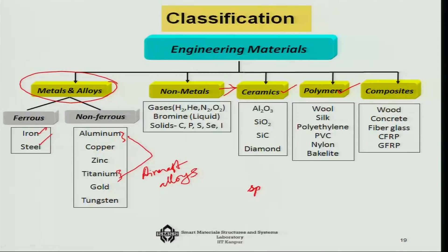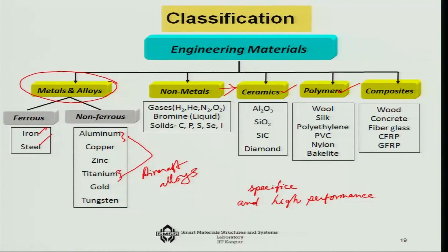I would say specific and high-performance applications — that is where you need the non-ferrous metals other than aluminum: titanium, tungsten, vanadium, molybdenum, chromium, etc., for these types of things.